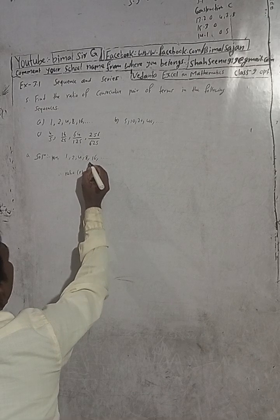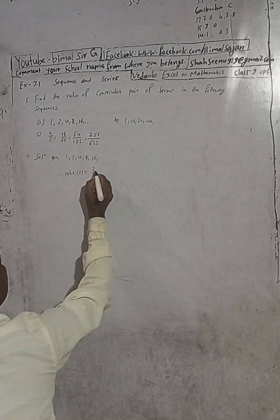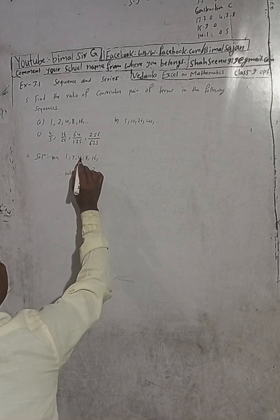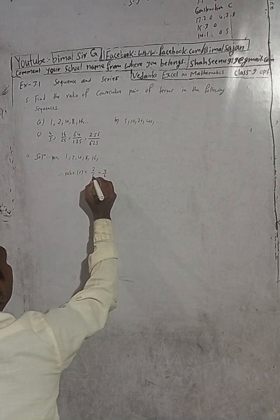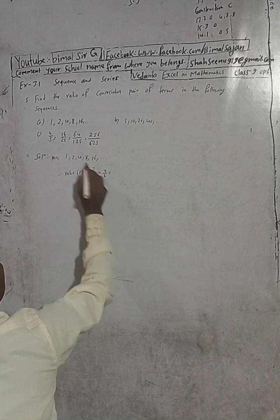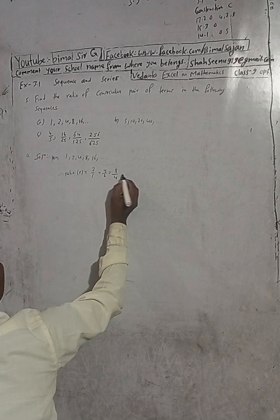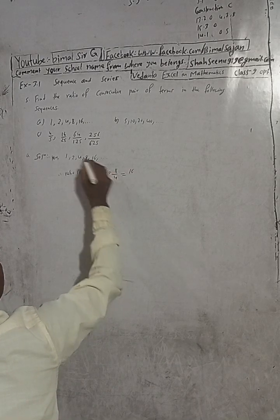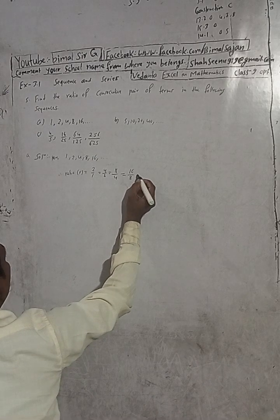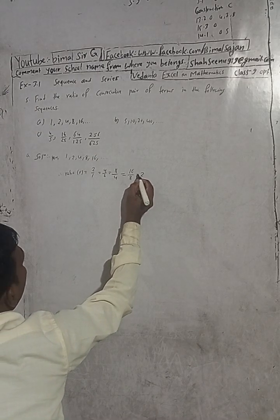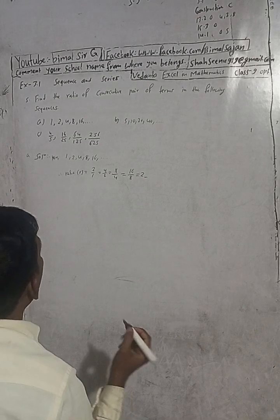The ratio of consecutive terms is equal to R, which is called the common ratio. For consecutive terms, we compute the ratio of each successive pair to determine R.